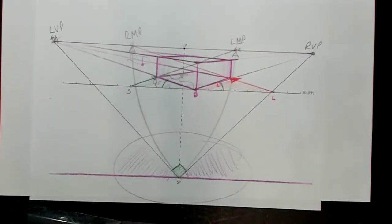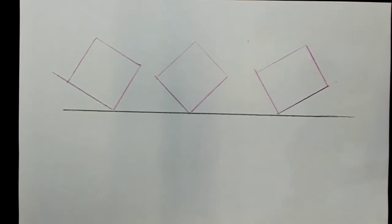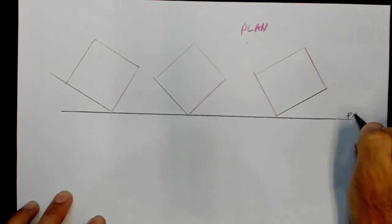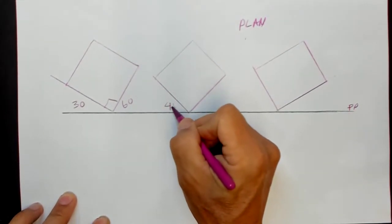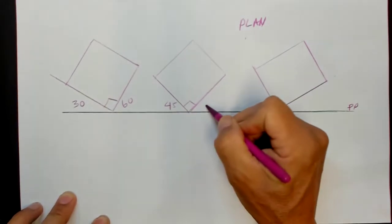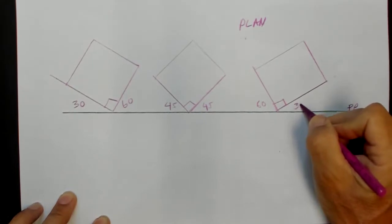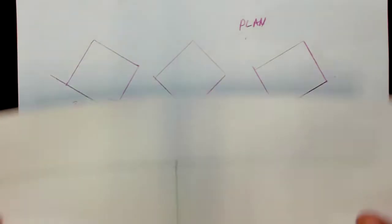If we wanted to draw something like this — here are three shapes, all at different angles to the picture plane. This is a plan view, so you're looking straight down, and the green line is the picture plane. This one is at a 30-degree angle. This one is 90. This one is at a 45-degree angle with a 90-degree corner. And this one is 60 degrees with a 90-degree corner, at a 30-degree angle.